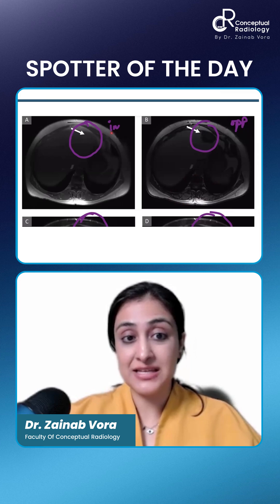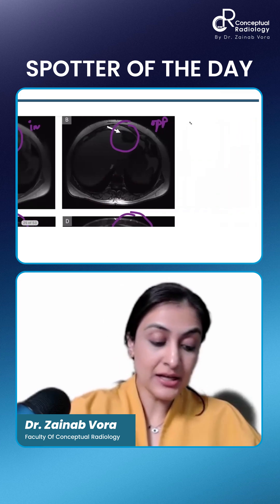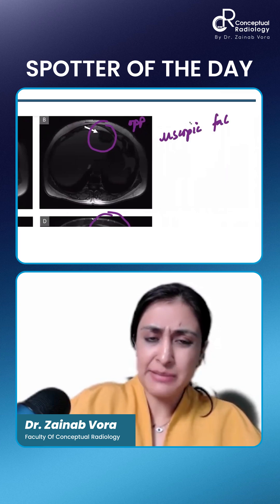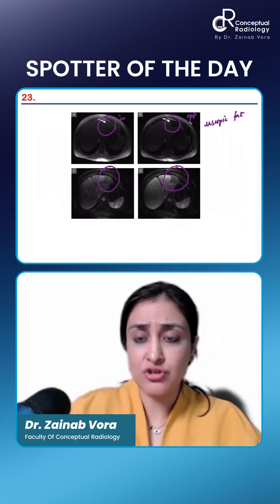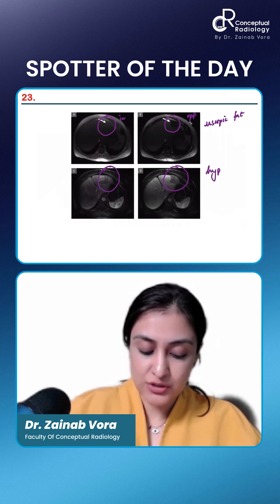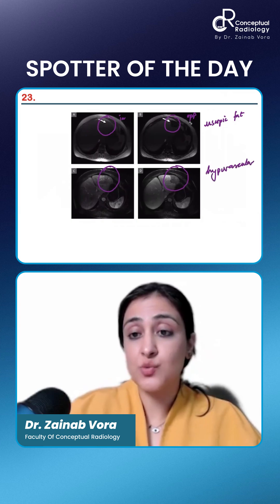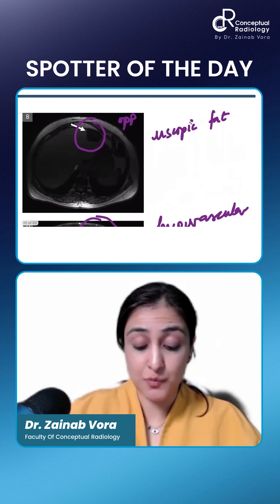So what are we seeing? It is almost completely made up of microscopic fat — microscopic fat with a hypovascular nature. Now, what are you starting to think of? What pathologies, what liver masses can have microscopic fat?